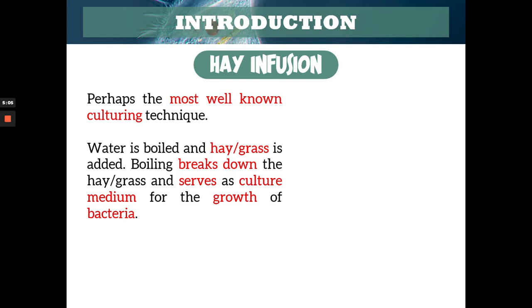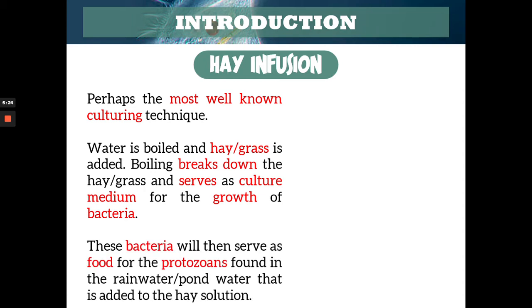The main procedure is that you boil water and then put hay — or here in the Philippines, grasses like carabao grass or kogon grass. This grass serves as the medium or source of food for the growth of bacteria. And once bacteria has fully grown, the protozoans will thrive because the bacteria is now the source of food for the protozoans. Boiling breaks down the hay and grass so that the sugar from the hay is released, so that the bacteria can feed on it.